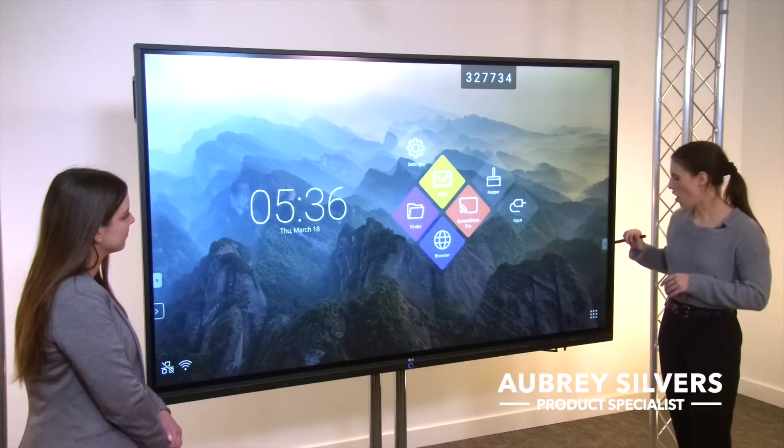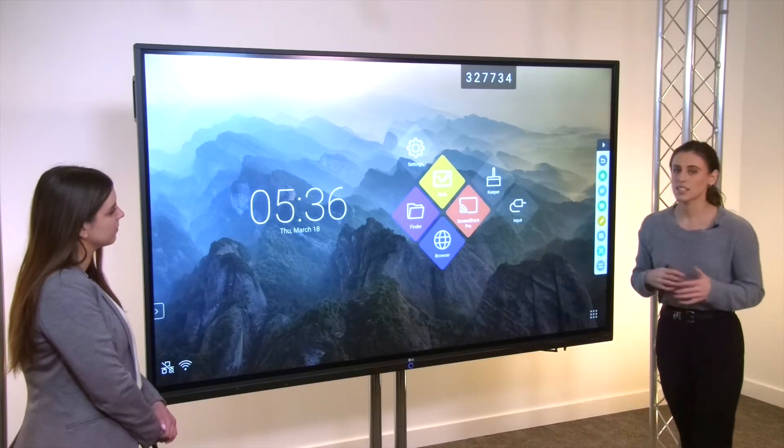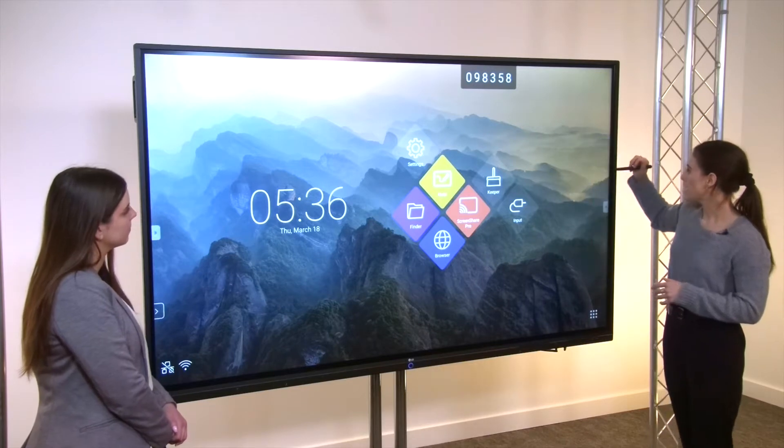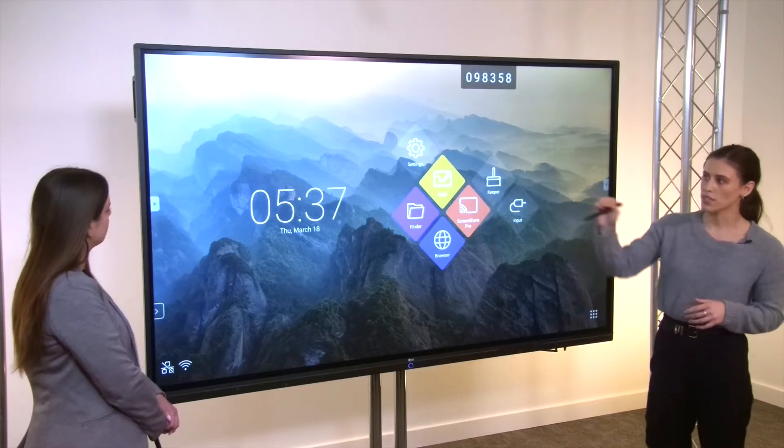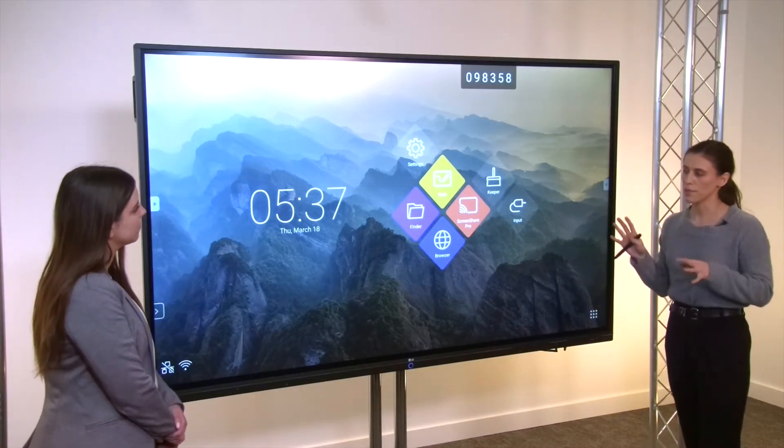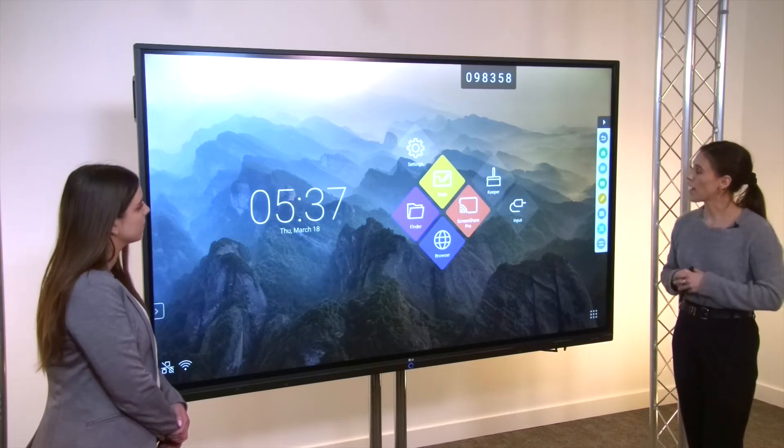First, let's look at our side panel here. This is going to give you easy access to some of your applications and tools. This is easy to move up and down. You also have access to it on both sides of the screen. You can also access it no matter what window you're in. Any application that you have open, you can easily click this and access any of these applications.